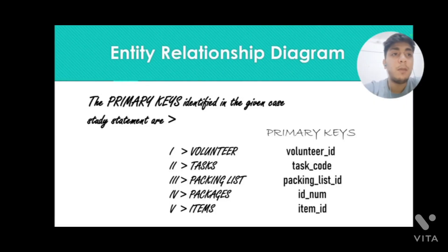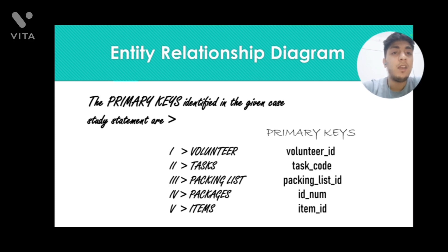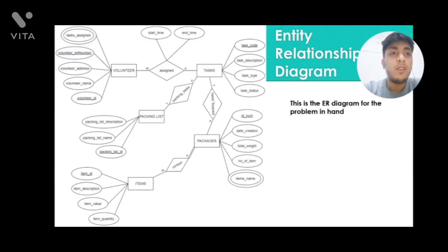A primary key is a unique attribute used to identify tuples in a relation — a primary key cannot have a null entry. In the volunteer entity, volunteer ID is the primary key; in task, it is task code; in packing list, it is packing list ID; in packages, it is ID number; and in items, it is item ID. In the ER diagram, the volunteer entity and task entity have a many-to-many relationship called 'assigned'.